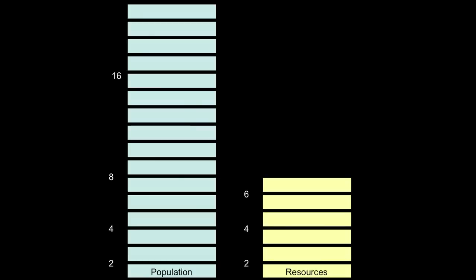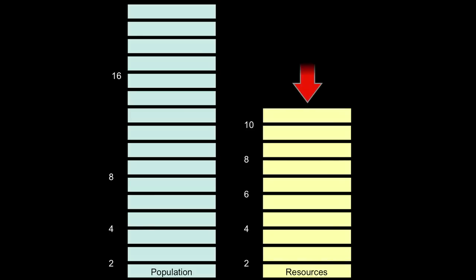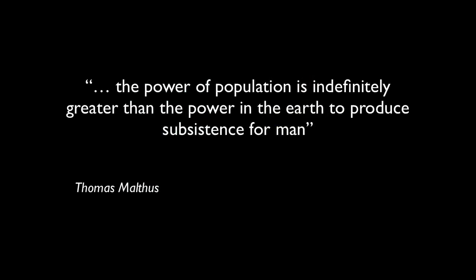The food supply, on the other hand, increases only in an arithmetical fashion: 2, 4, 6, 8, etc., leaving an increasing deficit between food produced and mouths to be fed. Malthus concluded that the power of population is indefinitely greater than the power of the earth to produce subsistence for man.